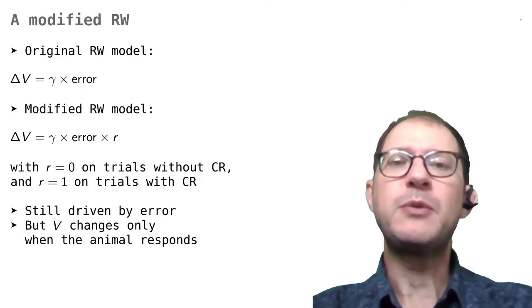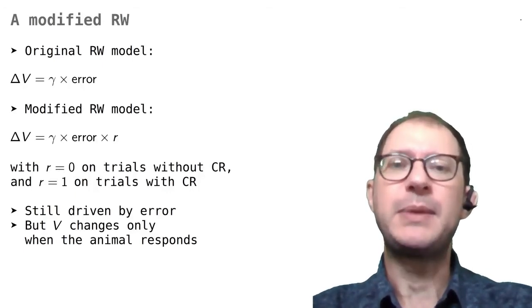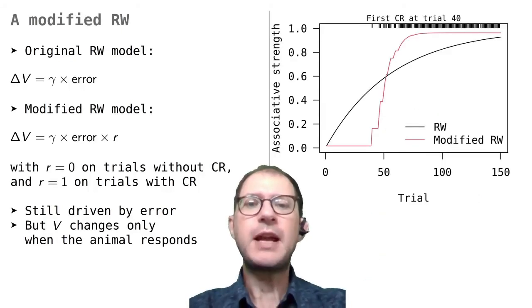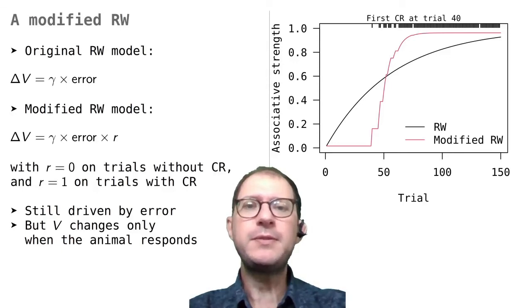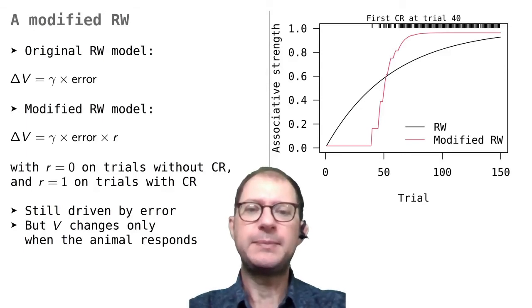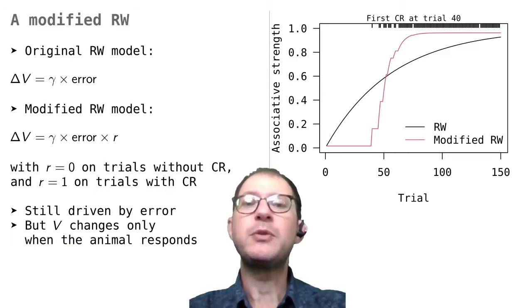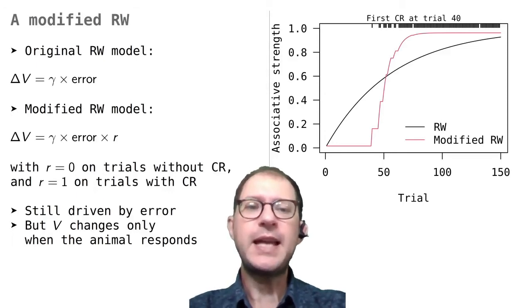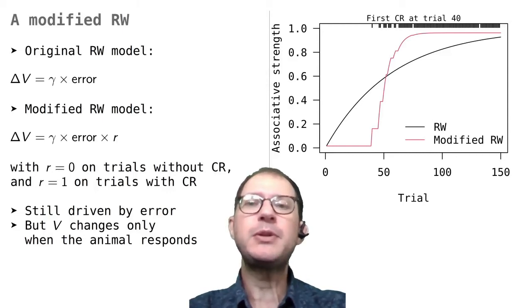To see if the revised model works better, let's look again at the rabbit data. This graph is about one particular rabbit and the bars at the top show when this rabbit responded. The first response was at trial 40. The black line is the best fit of RW to the data. In contrast to the line that I showed earlier, which refers to the whole group of rabbits, this time I tuned RW to be the best possible description of this particular rabbit.